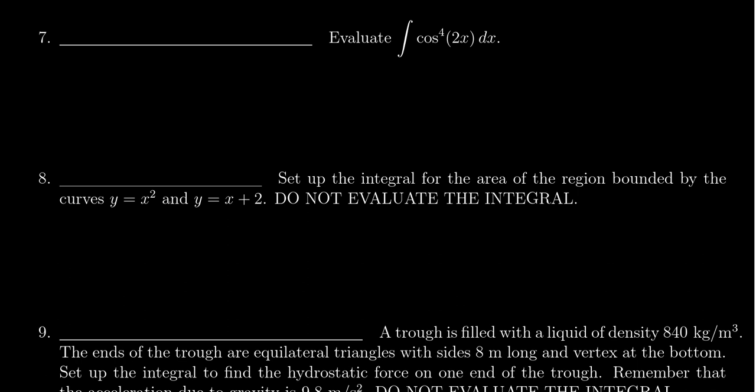So what might we do to try to calculate the antiderivative here? Well, because we have this cosine to the fourth, it's going to be useful to use the half angle identity here. That is, cosine squared of x is equal to one half, one plus cosine of 2x.